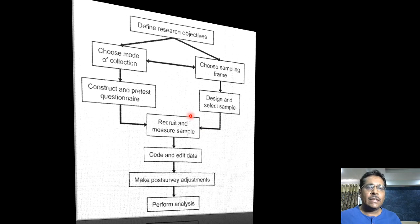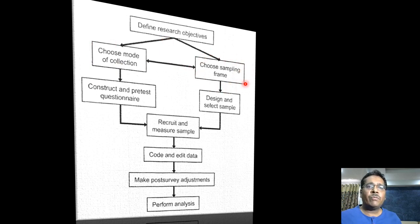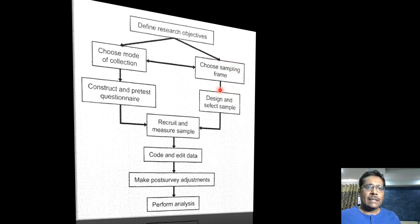To give an overview of the survey method: the first and most important thing is to define the research objectives. Then we do two things simultaneously — we choose the mode of data collection, whether face-to-face, by telephone, using computer software, or email, and at the same time we choose the sampling frame and design and select the sample.